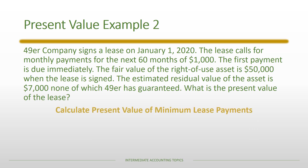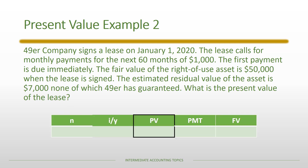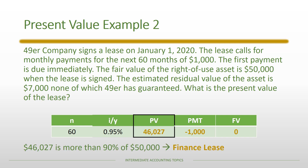We take that information and calculate the present value of the minimum lease payments. Using the TVM framework, N and I/Y are unchanged from our previous calculation. The payment sign switches because the lessee is making the payment rather than receiving it. In this case they have not guaranteed any residual value, so FV becomes zero. We calculate the present value and get $46,027, which is more than 90% of $50,000, therefore this is also a finance lease.